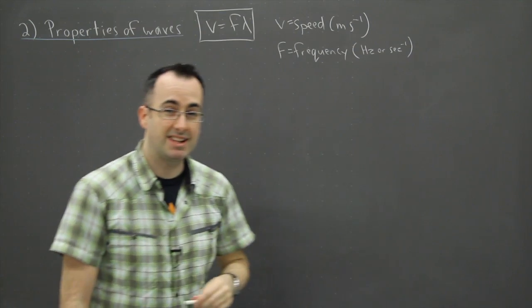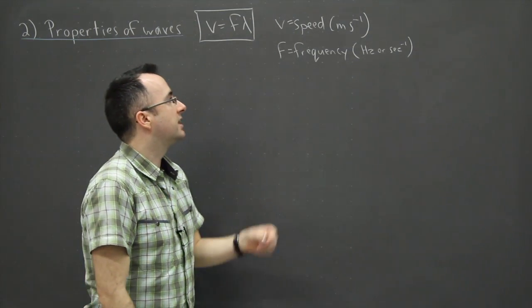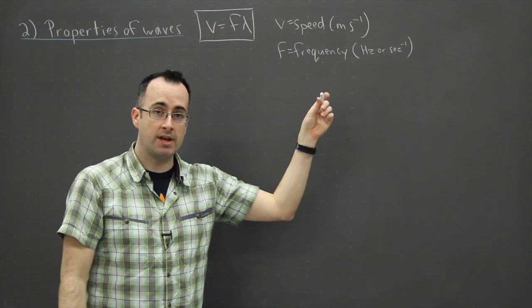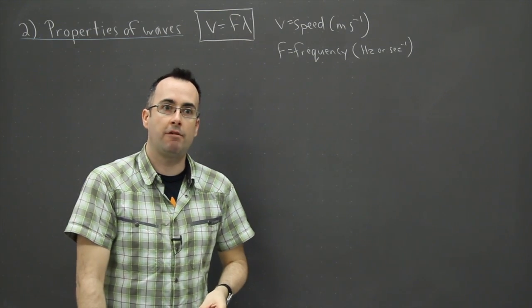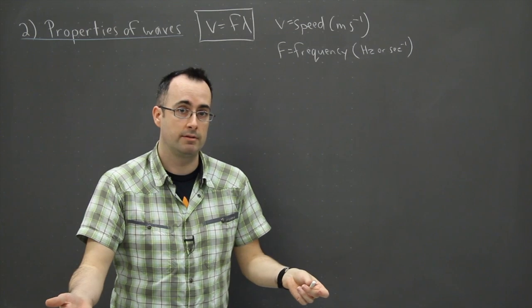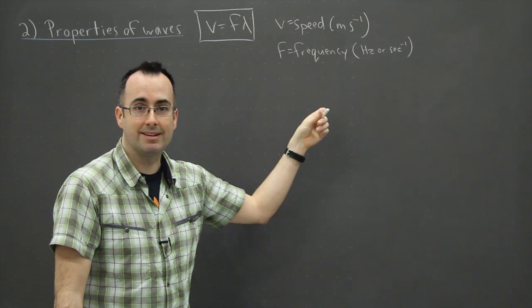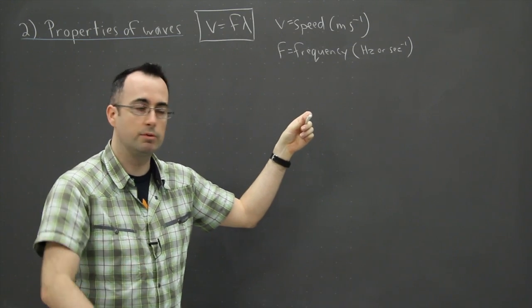That's the same thing. Basically, how many times per second does something happen? If you think about frequency, one common use is in a computer. It might be three gigahertz, so that tells you it's three billion operations per second. That's what three gigahertz would be.